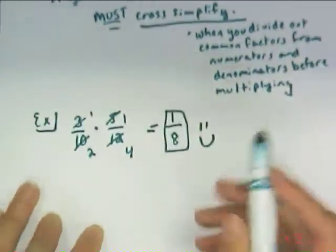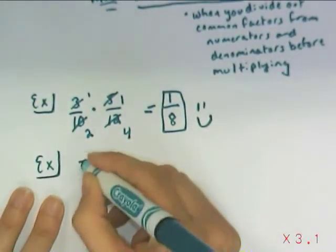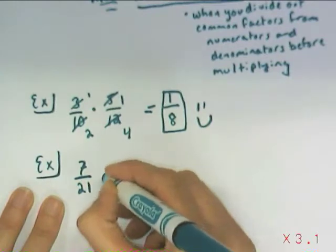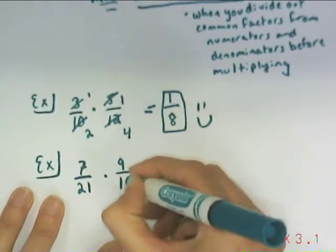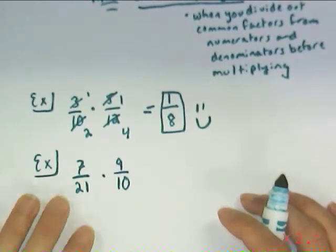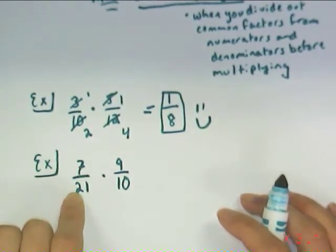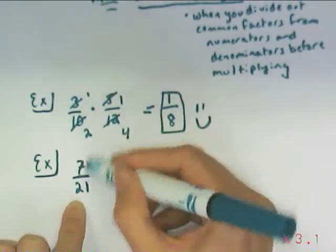So here's our second example, and please do these along with me. I've got 7 over 21 times 9 over 10. Anytime we do fraction work, you're going to want to deal with small numbers. So I'm looking at the fraction 7 over 21, and I can go ahead and simplify that right now. 7 over 21 is 1 over 3.